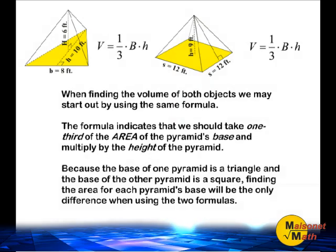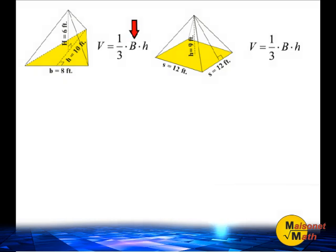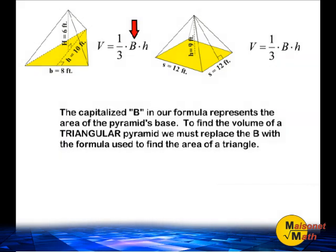Because the base of one pyramid is a triangle and the base of the other pyramid is a square, finding the area for each pyramid's base will be the only difference when using the two formulas. The capitalized B in our formula represents the area of the pyramid's base.